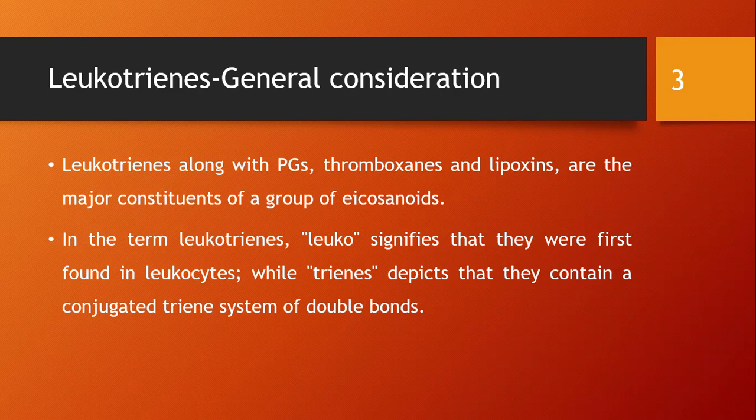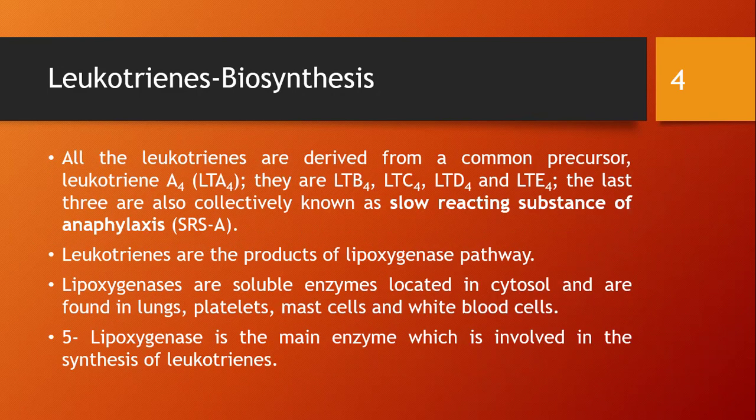'Trienes' means they contain a conjugated triene system — three double bonds (the suffix '-ene' in chemistry indicates a double bond). All leukotrienes are derived from a common precursor, leukotriene A4 (LTA4).